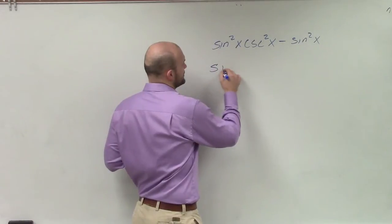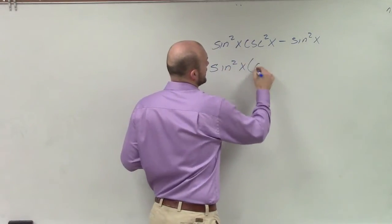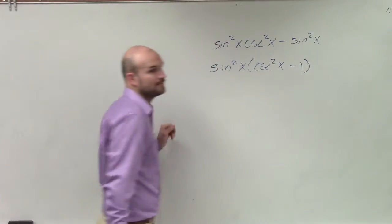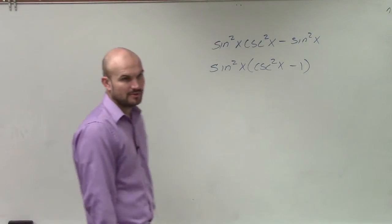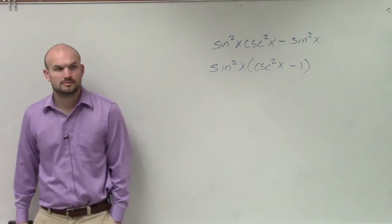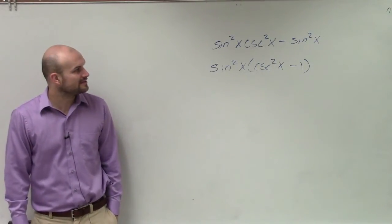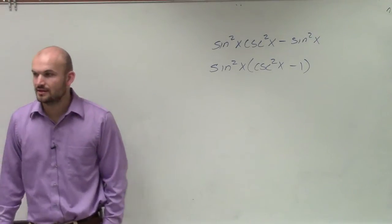So when I'm factoring this out, I have now cosecant squared of x minus 1, right? Would everybody agree with that? If I factor out sine squared, I'm left with a cosecant squared of x minus 1.